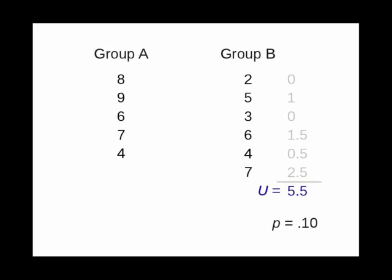If you look up that value in a table, you'll see that a value of 5.5 has a probability of 0.101, so there isn't a statistically significant difference between these two groups.